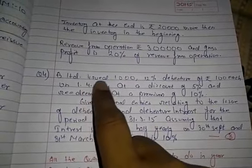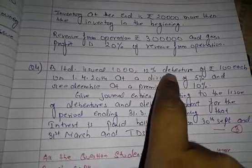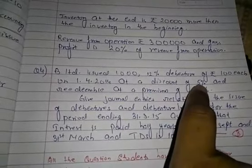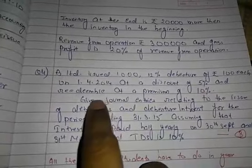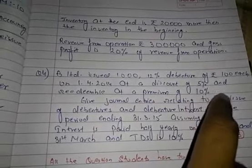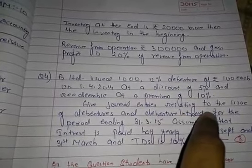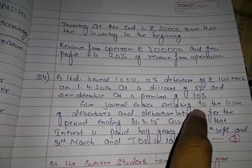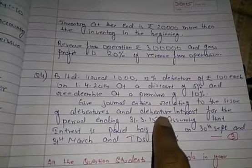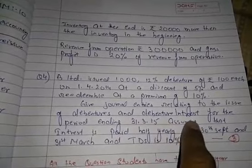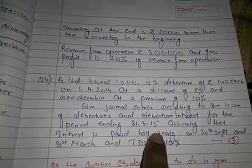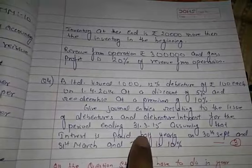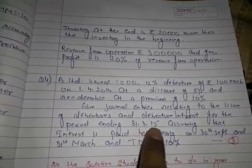Question four is also of three marks. B Limited issued 1,000 12% debentures of rupees 100 each on 1st April 2014 at a discount of 5% and redeemable at a premium of 10%. Give the journal entries relating to the issue of debentures and debenture interest for the period ending 31st March 2015, assuming that interest is paid half-yearly on 30th September and 31st March, and TDS is 10%.